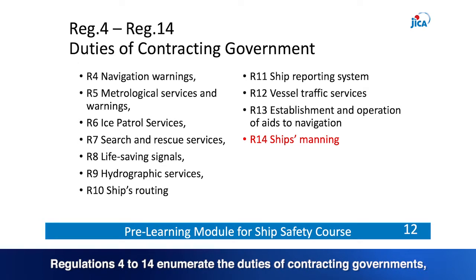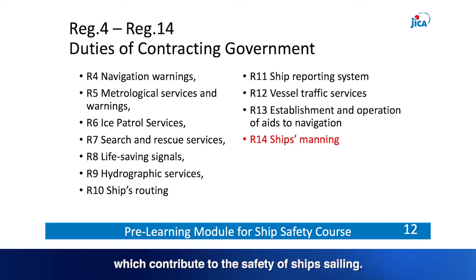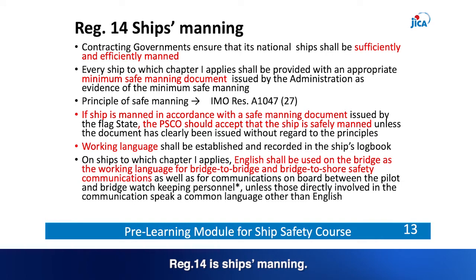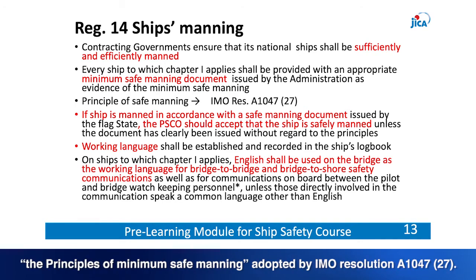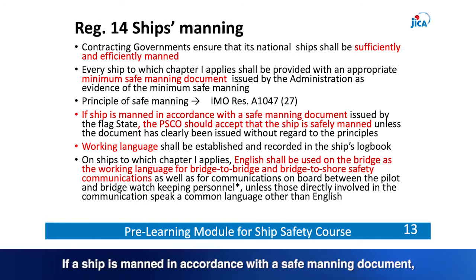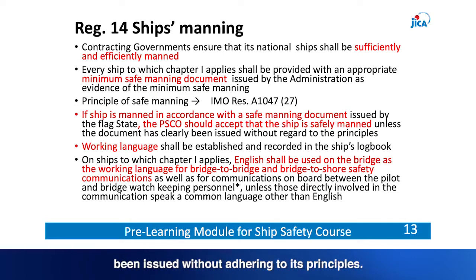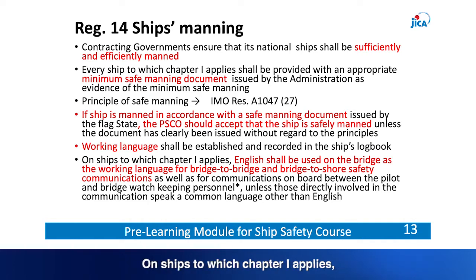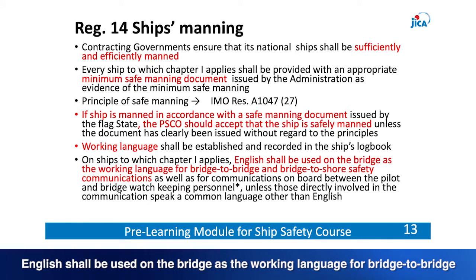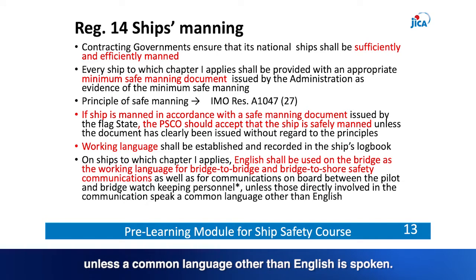Regulations 4–14 enumerate the duties of contracting governments which contribute to the safety of ships sailing. Regulation 14 is ships manning. The contracting governments ensure that national ships shall be sufficiently and efficiently manned. Every ship to which Chapter 1 applies shall be provided with a minimum safe manning document issued by the administration, in accordance with IMO Resolution A1047(27). Working language shall be established and recorded in the ship's logbook. English shall be used on the bridge as the working language for bridge-to-bridge and bridge-to-shore safety communications, unless a common language other than English is spoken.